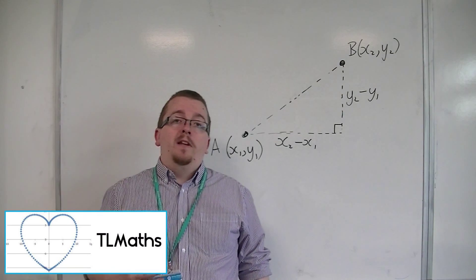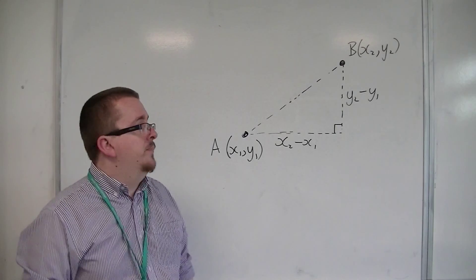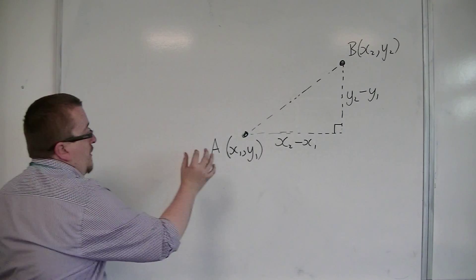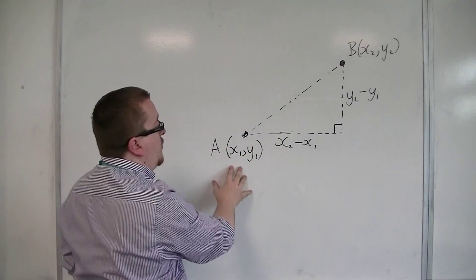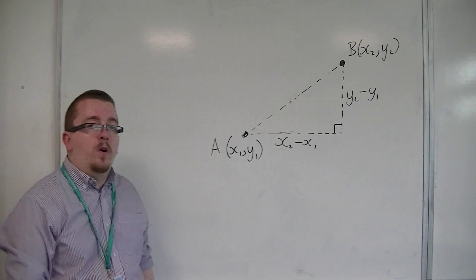In this video, we're going to be looking at finding the gradient of a line between two points. If I have the coordinates A and B, A has the coordinates x1, y1, and B has the coordinates x2, y2.